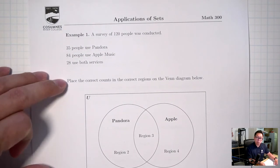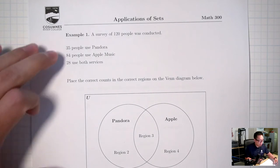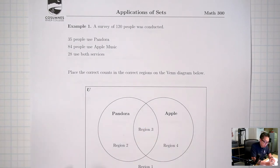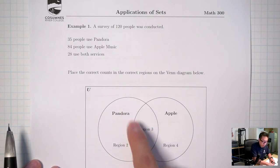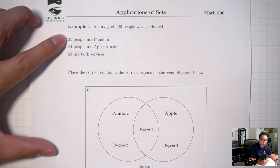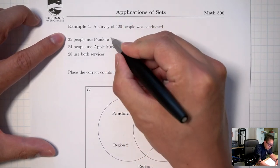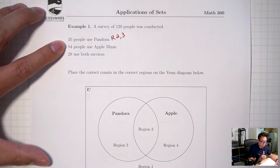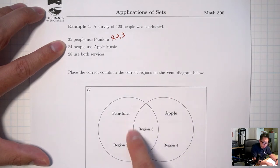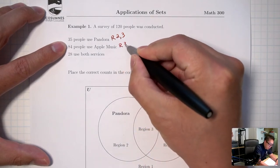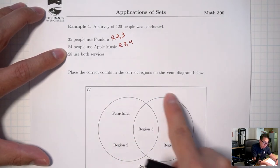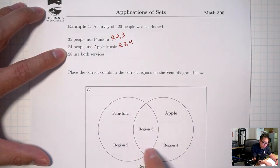Let's go through each of the clues. 35 people use Pandora — which regions are represented? Inside Pandora is regions 2 and 3, so 35 is represented by regions 2 and 3. 84 people use Apple Music — that's represented by regions 3 and 4, so 84 is regions 3 and 4 together. 28 people use both services — which region is inside both circles? That's the overlap, which is just region 3.